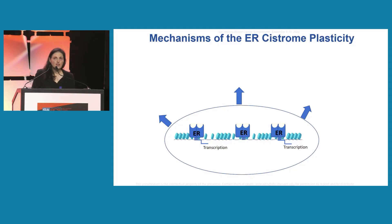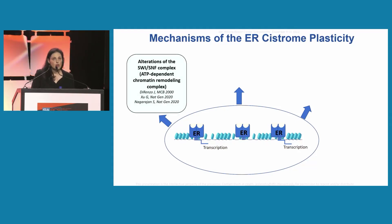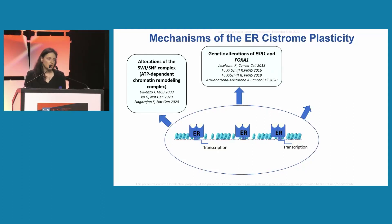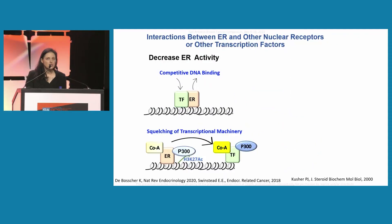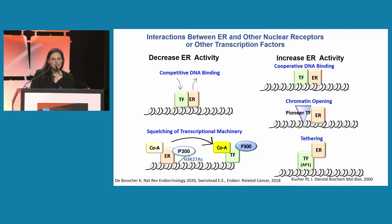There are a number of mechanisms that facilitate ER cistrome plasticity, among them alterations of the SWI-SNF complex, genetic alterations of ESR1 and FOXA1, as well as interactions between ER and other transcription factors including other nuclear receptors. These interactions can either decrease ER activity — through competitive DNA binding or squelching of key coactivators — or increase ER activity, as in cooperative DNA binding and chromatin opening by a pioneer transcription factor like FOXA1, and also through a tethering mechanism by which ER binds a different transcription factor such as the AP1 complex.